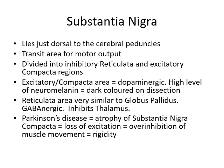The substantia nigra lies just dorsal to the cerebral peduncles, sometimes described as part of the midbrain. It is a transit area for some motor output and divides into two regions: the inhibitory substantia nigra reticulata, and the excitatory substantia nigra compacta. The compacta is dopaminergic — dopamine being an excitatory neurotransmitter. There is a high level of neuromelanin in the compacta, which pigments the neurons black, giving the region its name — 'substantia nigra,' meaning black substance in Latin. The reticulata, however, is more like the globus pallidus: GABAergic and inhibitory to the thalamus.